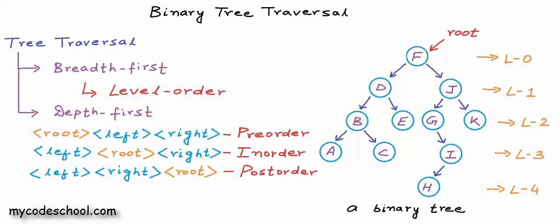In total, there are six possible permutations for left, right, and root. But conventionally, a left subtree is always visited before the right subtree, so these are the three strategies we use. Only the position of root is changing: if it's before left and right, it's pre-order; if it's in between, it's in-order; and if it's after left and right subtree, it's post-order.